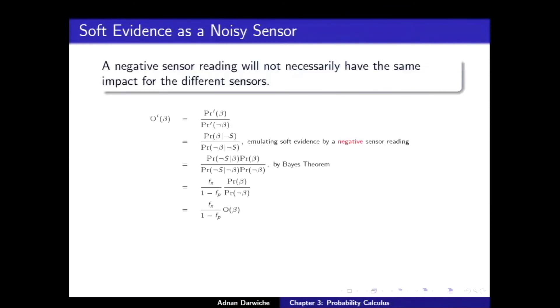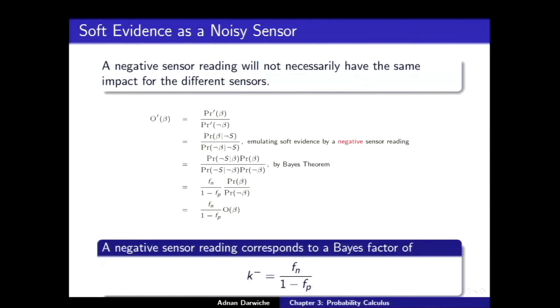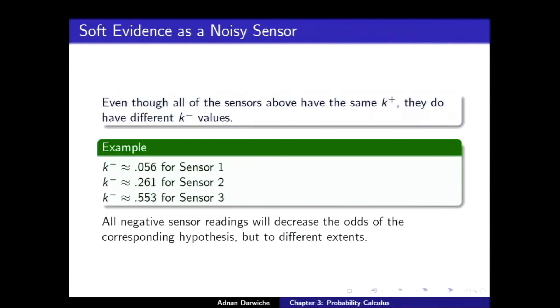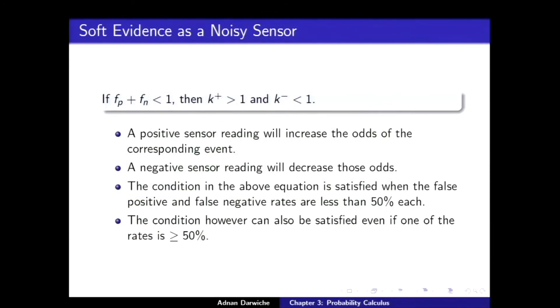And in this case, as I said, you can do a similar derivation and you get the K minus. Which is what happens when I get the sensor negatively. And you get a K minus, which is FN over one minus FP. It's kind of dual to the other guy. And for the previous example, those three sensors are not equivalent. So, what other insights does this give us? If the false positive and false negative, their sum is less than one, then K plus is greater than one and K minus is less than one. What does that mean? If the false positive and negative rate, and they're less than one, then a positive sensor reading will always support and a negative will always refute. This equation is almost always satisfied because usually false positive and negative are small. Five percent, ten percent. But actually, what this is telling you, even if one of them is more than fifty percent, as long as the other is small enough so that the addition is less than one, you still have this. Believe it or not. It's interesting.